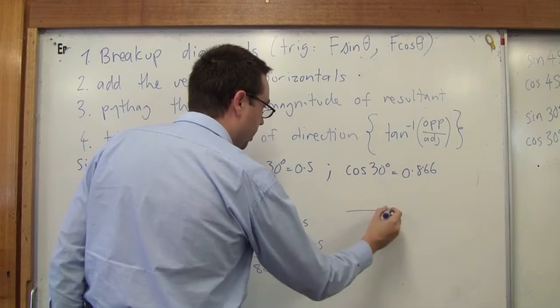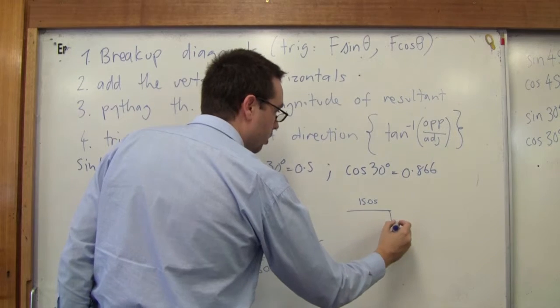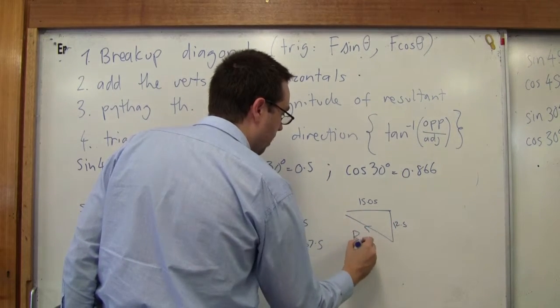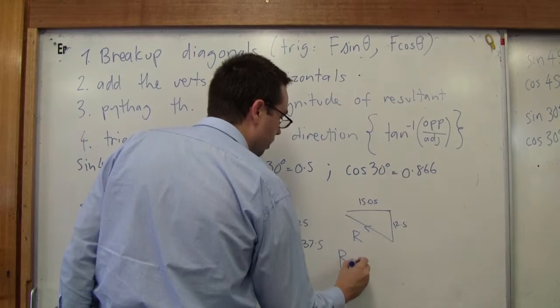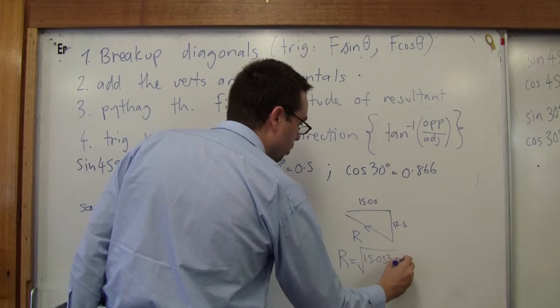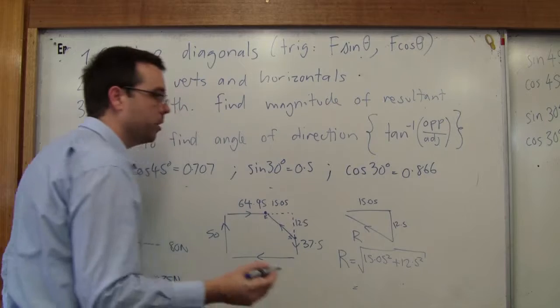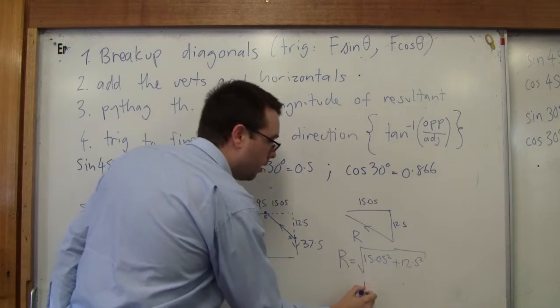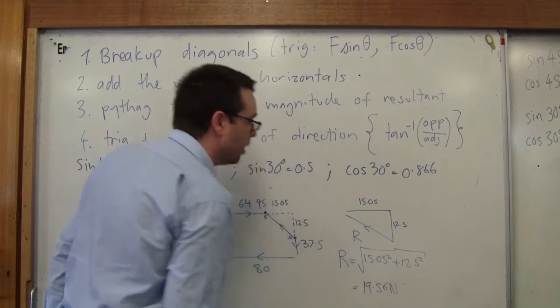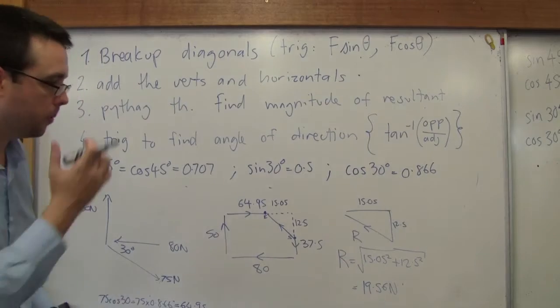Now, if I just draw that triangle up again, 15.05, 12.5 equals my resultant r. r equals the square root of 15.05 squared plus 12.5 squared equals, can someone tell me that? 19.56. 19.56 newtons. Does that seem plausible? Yeah. The hypotenuse must be bigger, right? So that's good.